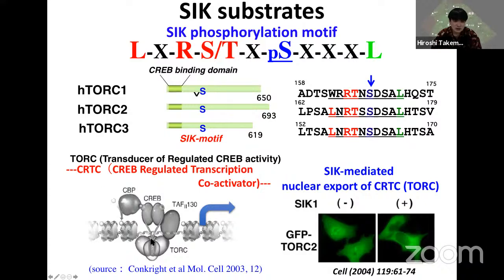We first checked CRTC intracellular localization using GFP. When CRTC is expressed as a GFP fusion protein, the GFP signal distributes in both nucleus and cytoplasm. However, when SIK1 is co-expressed, the nuclear signal disappears, indicating SIK1 promotes cytoplasmic retention of CRTC.